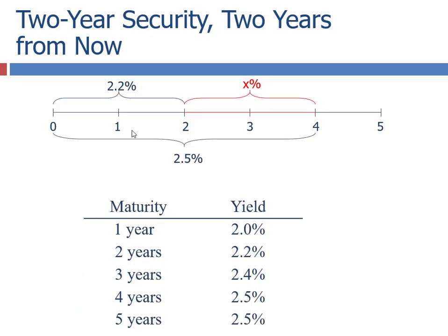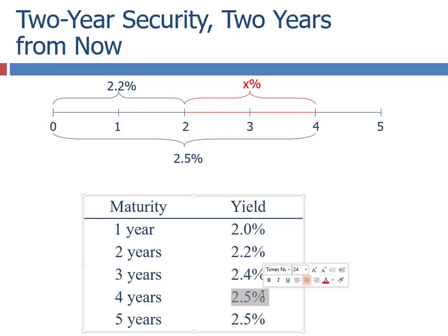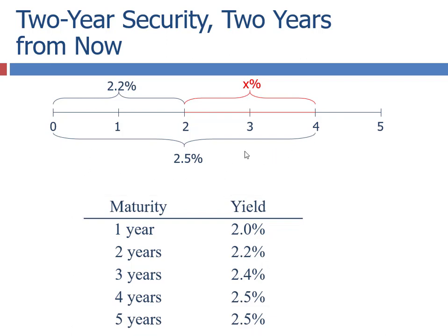Let's try another example, going longer term. Suppose we want a two-year security and want to know the yield for a two-year security two years from now. We observe today that the two-year yield is 2.2% and the four-year is yielding 2.5% per year. The yield on the four-year should equal the yield on the two-year times the unknown forward rate — the one in red. Should I do a four-year at 2.5%, or a 2.2% two-year, and what return do I need at that point for these two options to be equivalent?